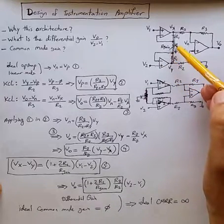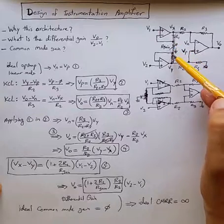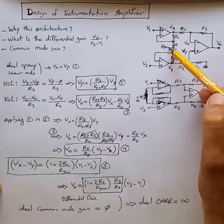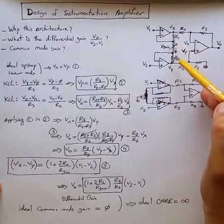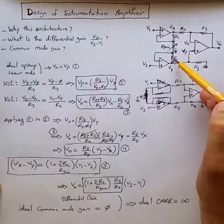So the current flowing through Rgain is just simply V1 minus V2 divided by Rgain. But that current has to flow through R1 on top and R1 at bottom as well.